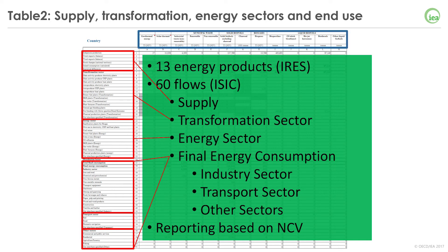Table 2 is the largest table, with 13 energy products listed across the top and 60 flows. Regarding the definition of energy products, we follow the IRES definition — IRES being the acronym for International Recommendations on Energy Statistics. The rows are broken up into supply and transformation sector, energy sector, and final energy consumption sector. Final energy consumption is divided into industry sector, transport sector, and other sectors. In the case of the energy sector and final energy consumption, flows should be reported per ISIC categories — the International Standard Industrial Classification. Products are needed to be reported on a net calorific value basis, but note that some products should be reported in another unit — for example, liquid biofuel should be reported in tonnes.